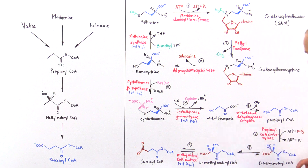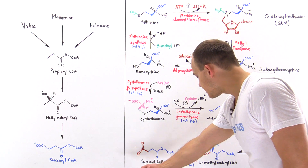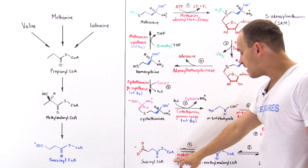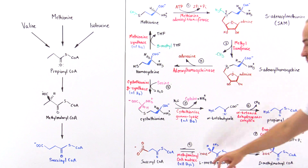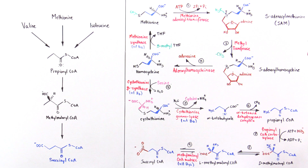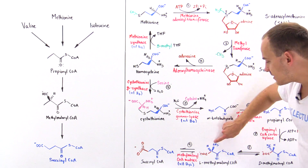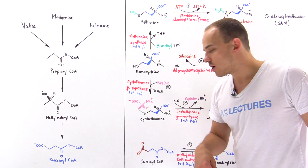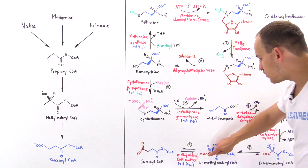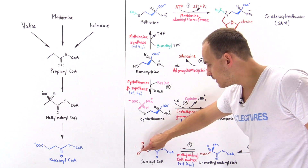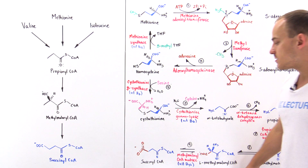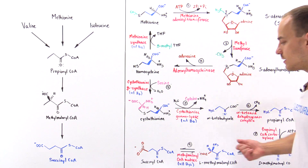In step 8, we change the isomer from the D-isomer to the L-isomer. In the final step — step 9 — the enzyme methylmalonyl coenzyme A mutase, which also utilizes vitamin B12 (cobalamin), extends the carbon chain by inserting one carbon. We go from a 3-carbon chain to a 4-carbon chain, and we form succinyl coenzyme A as our final molecule.